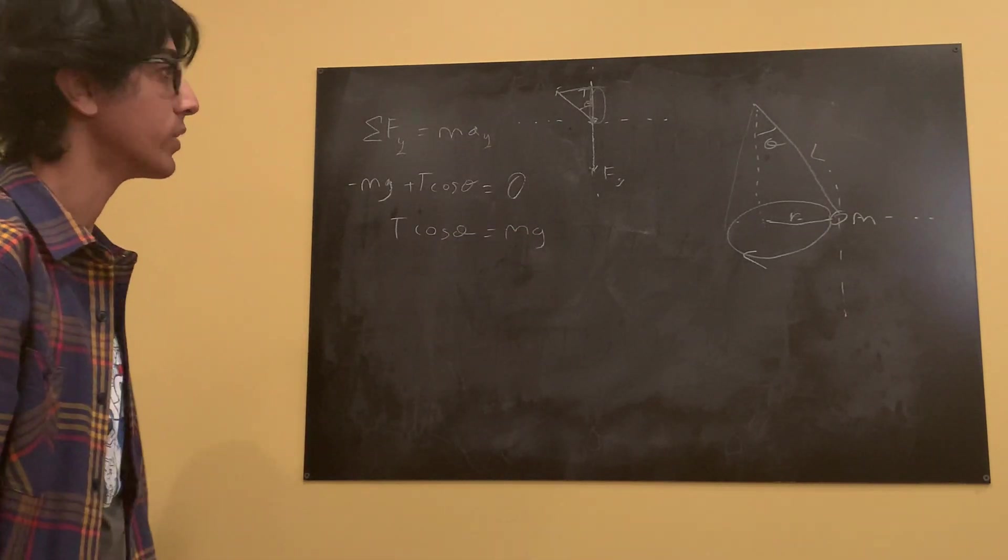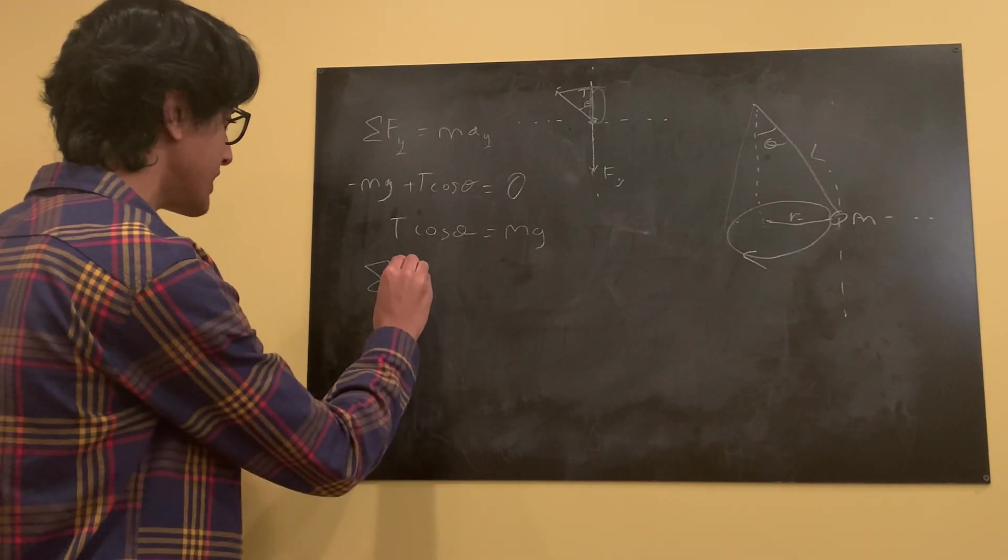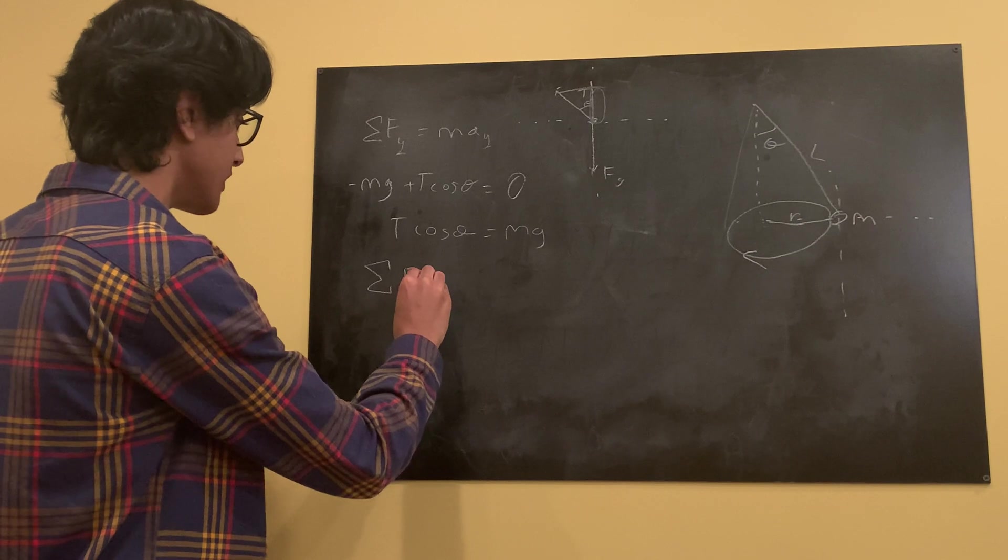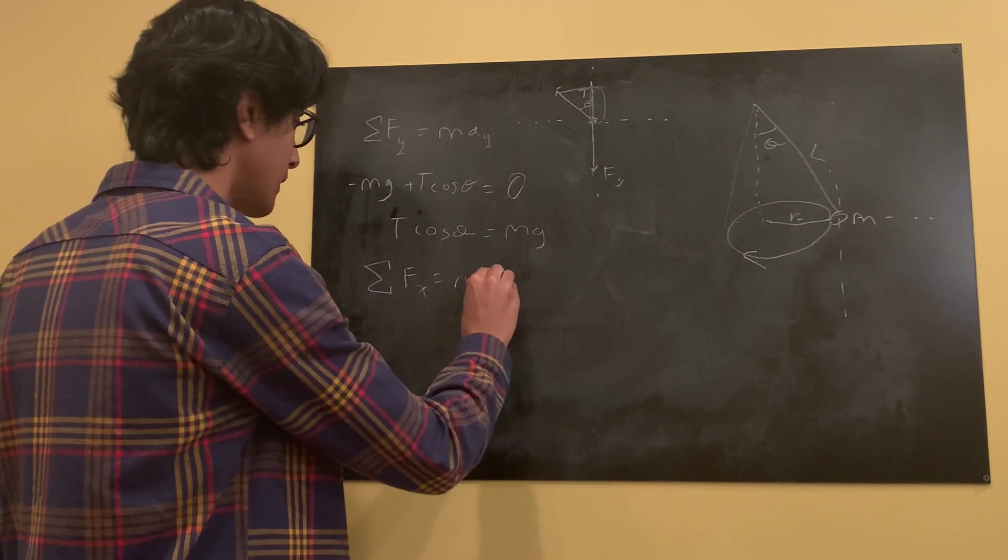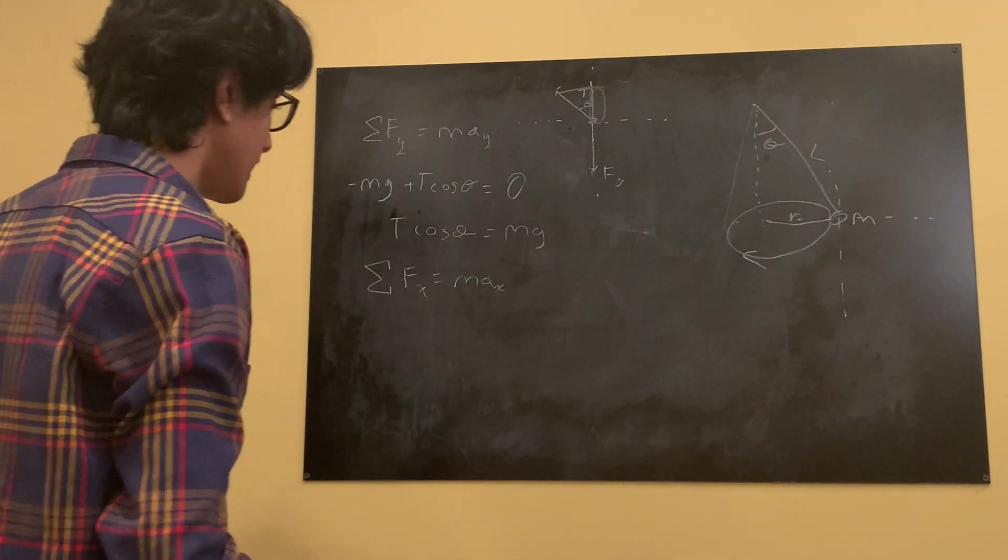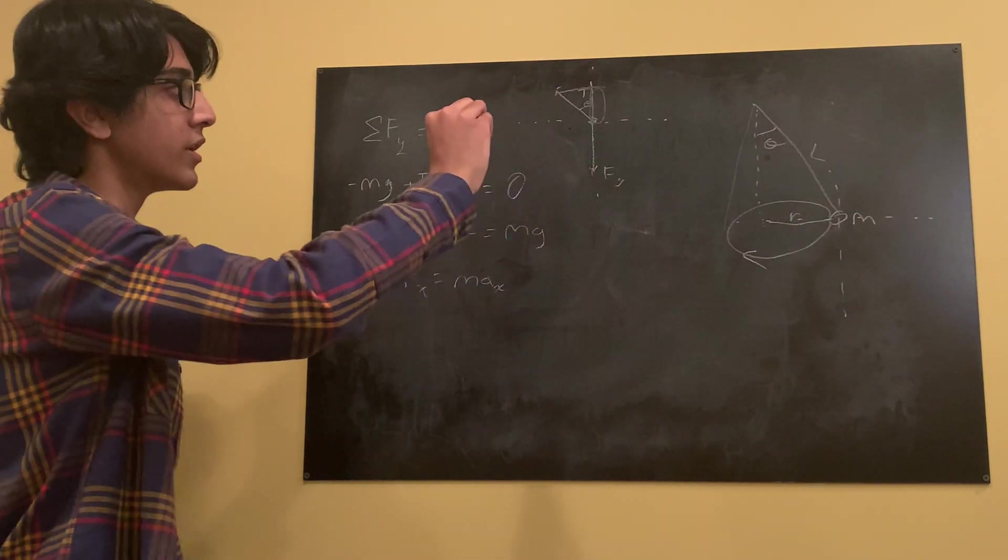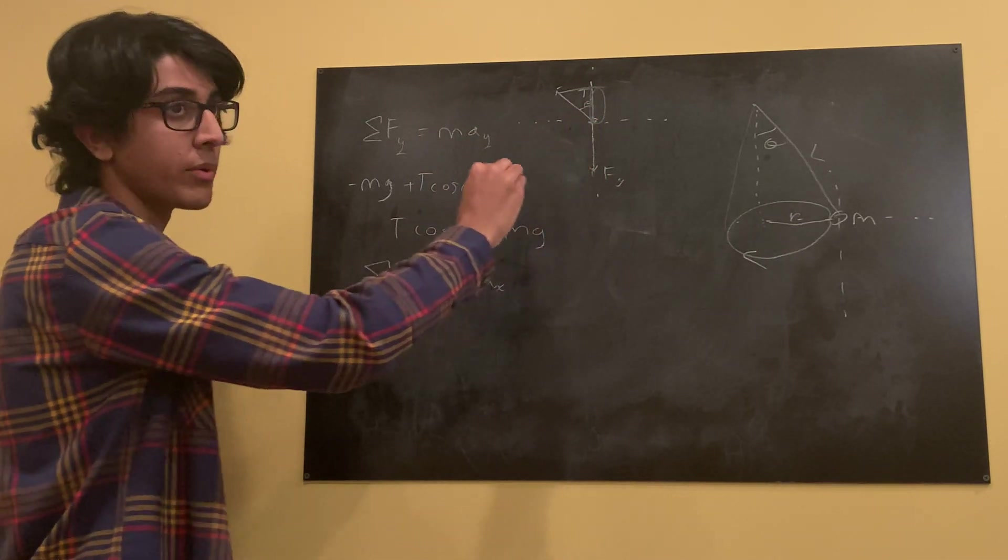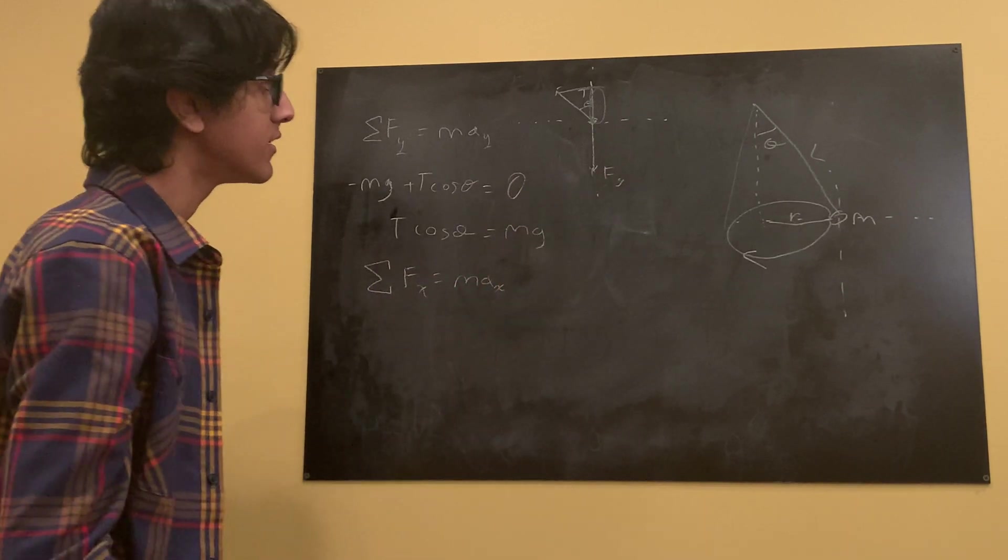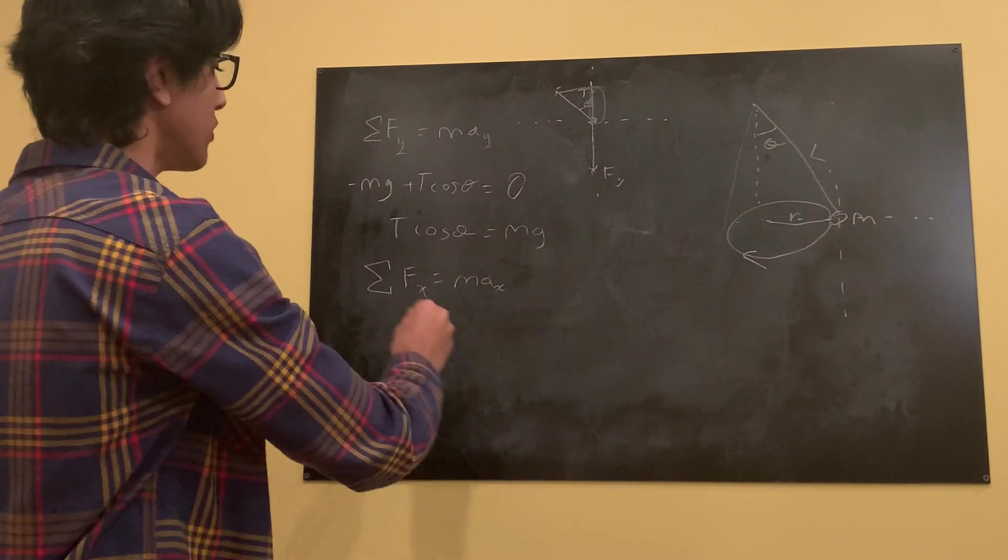And now let's sum our forces in the horizontal direction. Summation of forces in the x direction is equal to m a x. And let's see, what do we got in this x direction? Let's look at each force and evaluate if it has components in that direction. Fg does not have any component in this horizontal direction. All of it is vertical. No x component.